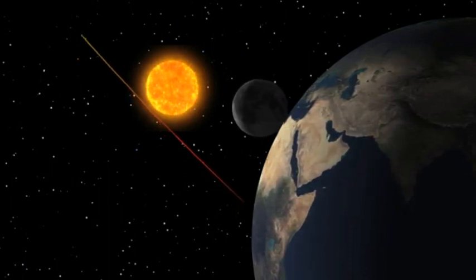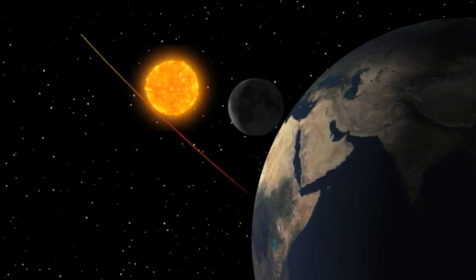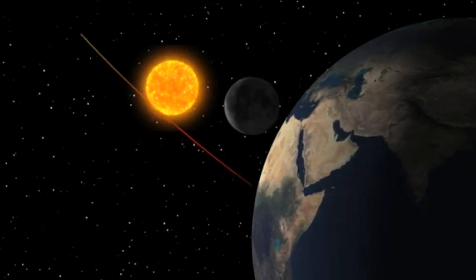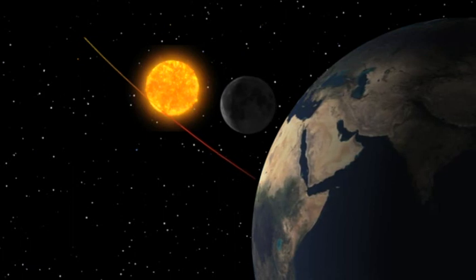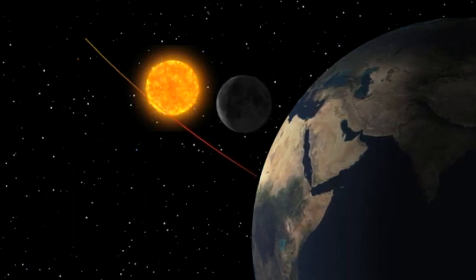But in Einstein's picture, a massive object like the Sun bends space itself. So starlight moving through the curved space should be bent by gravity. Who was right?